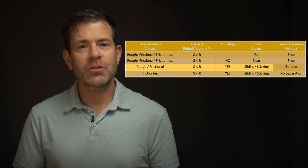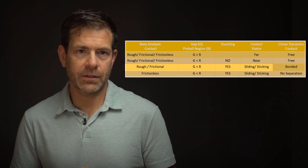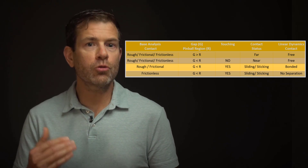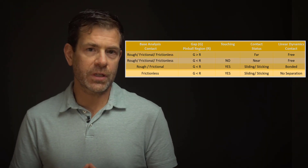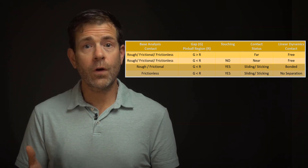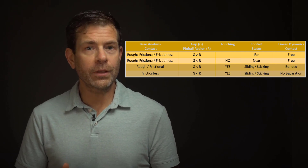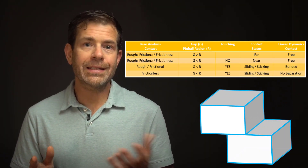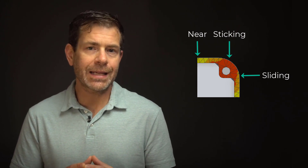And if it's touching, the status will report sliding or sticking depending on the contact specified and frictional settings. If the contact status is sliding or sticking, rough and frictional contact with mu greater than zero get converted to bonded contact, and frictionless becomes no separation. If the status is near or far, then all three nonlinear contacts are ignored. They'll be considered open throughout the solution, resulting in free motion in both the normal and tangential directions. Keep in mind that this behavior can vary along the contact, accounting for localized regions where the contact status changes.